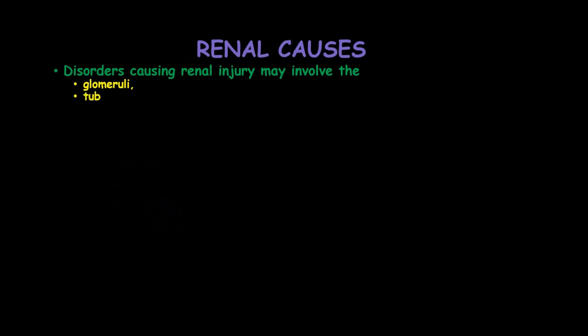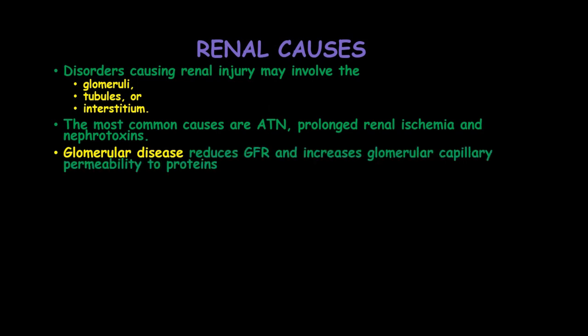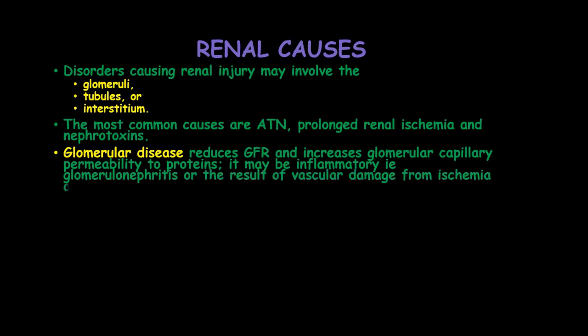The renal causes are disorders causing renal injury and can involve the glomeruli, tubules, or the interstitium. The most common causes are acute tubular necrosis, prolonged renal ischemia, and nephrotoxins. Glomerular diseases reduce the glomerular filtration rate and increase glomerular capillary permeability to proteins; they may be inflammatory such as glomerulonephritis, or result from vascular damage from ischemia or vasculitis.